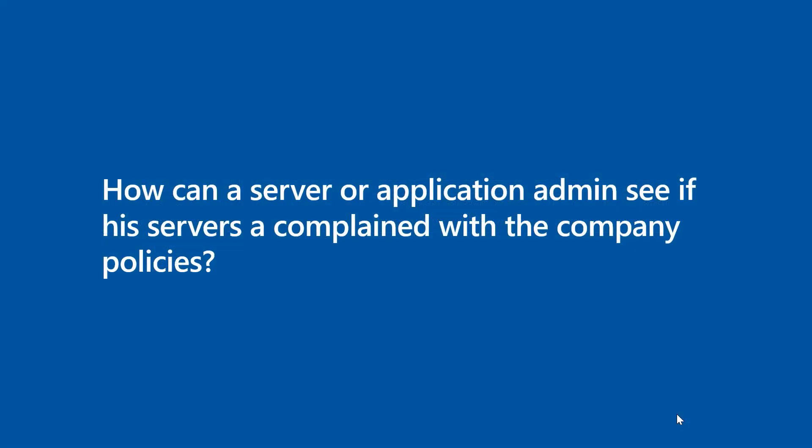The next thing I want to talk about is how a server or application admin can see if their servers are compliant with company policies. We just saw the cloud admin's view of all resources running in the cloud — which are compliant, which are not. But now think about an application owner with a couple of servers, some running in Azure and some on-prem. How do they get a view and see what is configured correctly and what is not? For that, we have another demo.